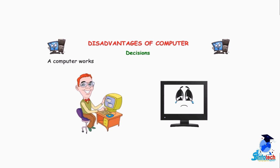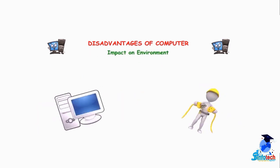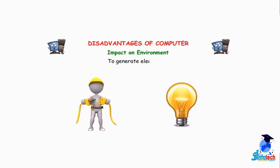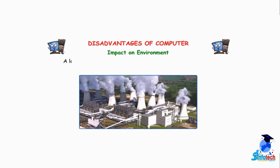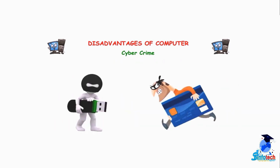Now let me tell you the disadvantages of a computer. Decisions — a computer works on human orders as it cannot take its own decisions. Impact on environment — a computer depends on electricity. To generate electricity, a lot of fuel is burnt in power plants, which causes pollution. Cybercrime — use of the internet may increase crimes like stealing of data, banking frauds, etc.